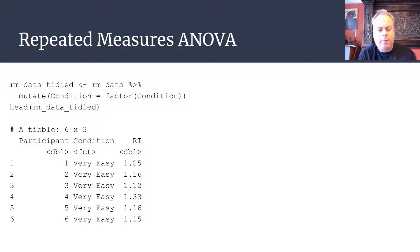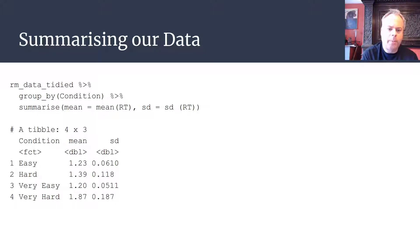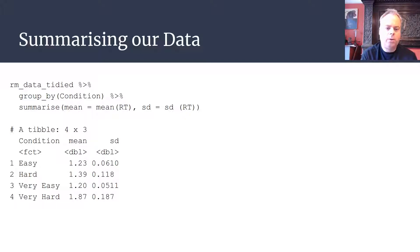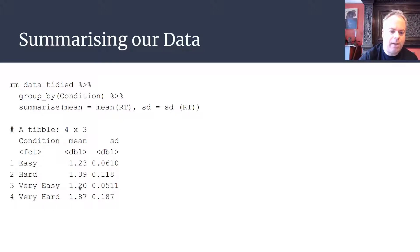After minimal data wrangling, we're going to generate some summary statistics — the same as we did for the one-way between-subjects ANOVA. We take our tidy data frame, group by condition, and ask for the mean and standard deviation of reaction time for each experimental condition. We can see that the very hard condition has the longest reaction time at around 1.87 seconds, while the very easy and easy conditions have pretty similar, faster reaction times.